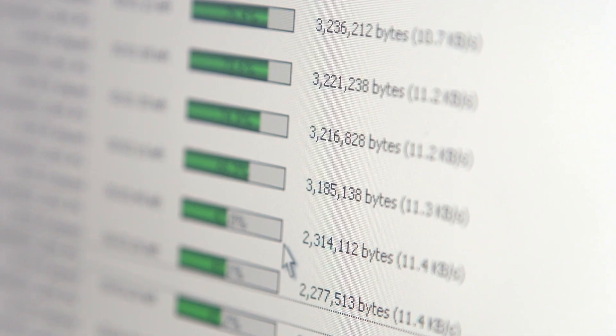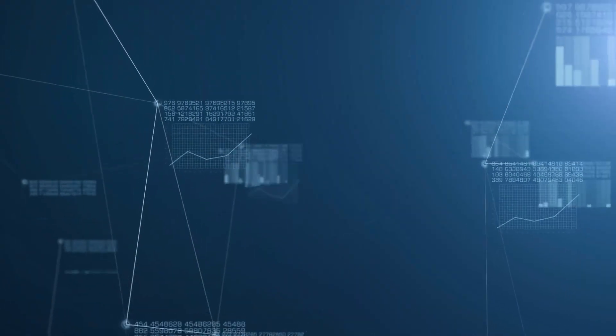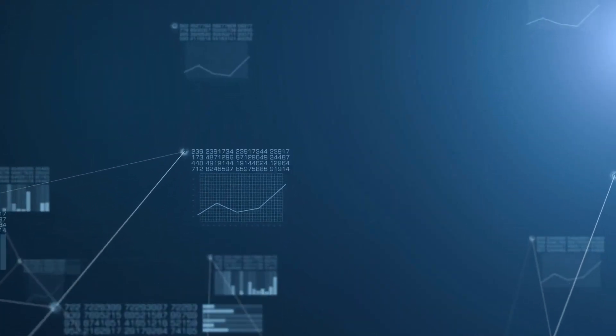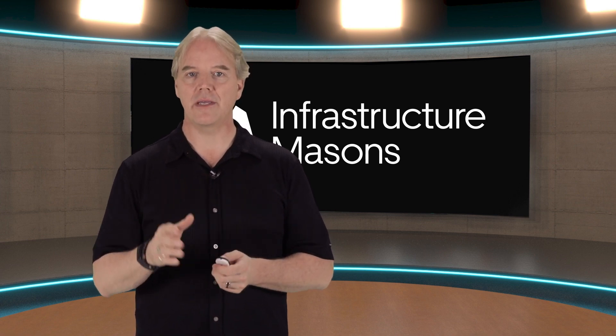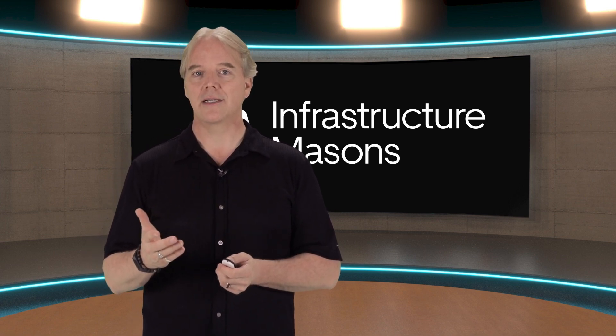The innovation of the internet was figuring out how to interconnect different networks and provide consistent ways for them to communicate. They created a standard called TCP IP. That's why it's called the internet. It's a bunch of interconnected networks.